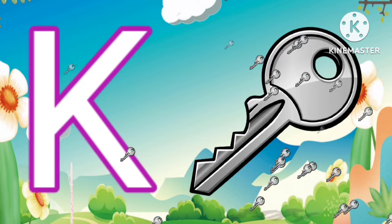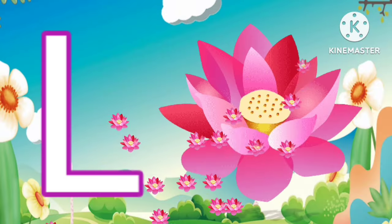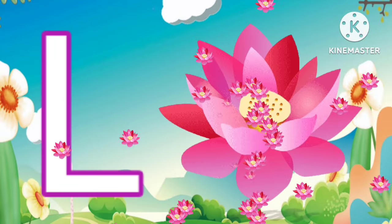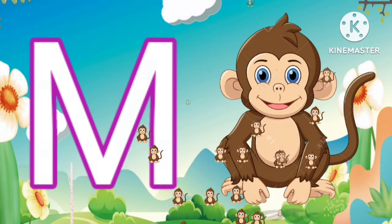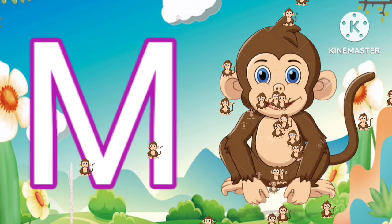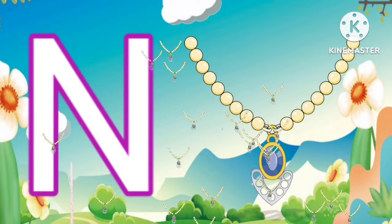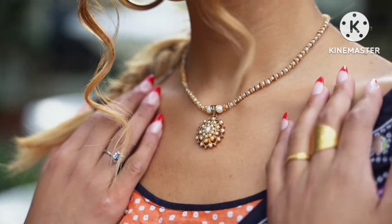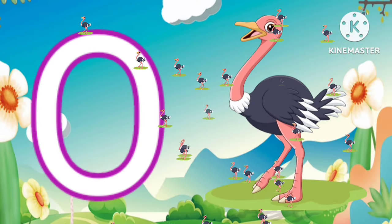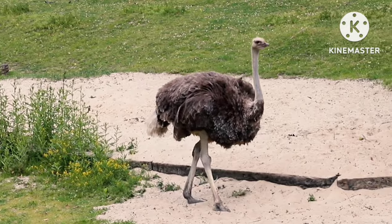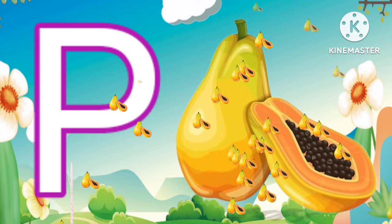K for key. L for lotus. M for monkey. N for necklace. O for ostrich. P for papaya.